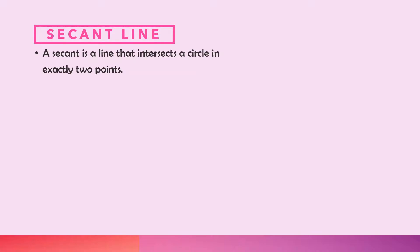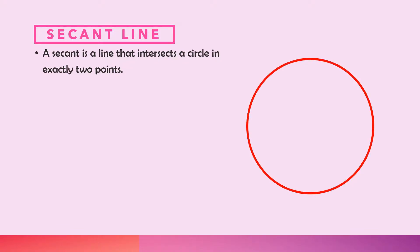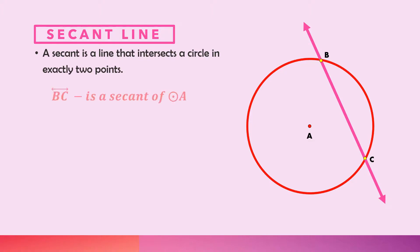Before we proceed with the angles formed by secant and tangent, let's review first the definition of secant line and tangent line. A secant line is a line that intersects a circle in exactly two points. So if you have a circle and you have a line passing through the circle intersecting it at two points — for this one we have point B and point C — then line BC is a secant line of circle A.